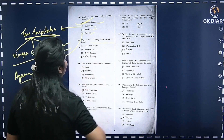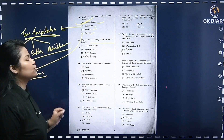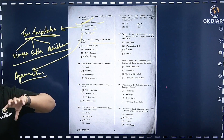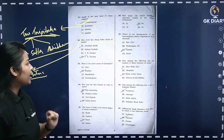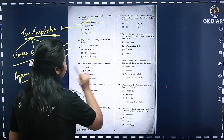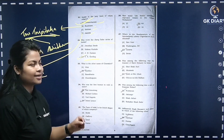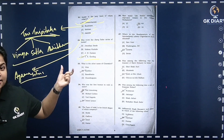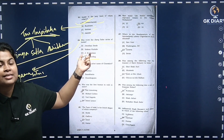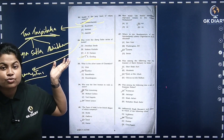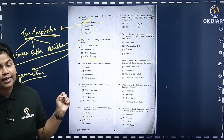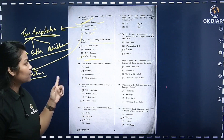Who wrote the Harry Potter series of books? The answer is J.K. Rowling. The correct option is D. J.K. Rowling wrote the Harry Potter series.